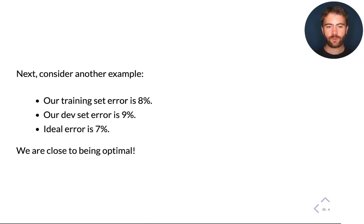And finally, if we have something like this: ideal is 7%, training is 8%, development is 9%. Even though these numbers are still far from 0, we know that we are close to optimal because these numbers are close to our optimal error rate.